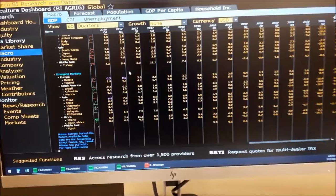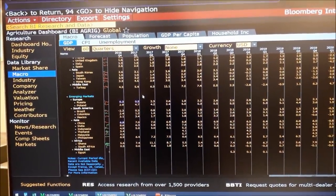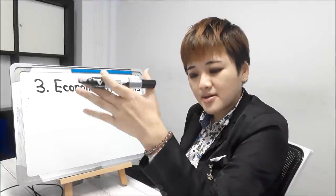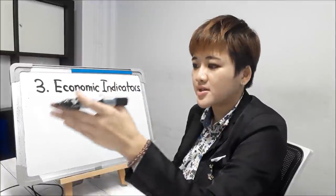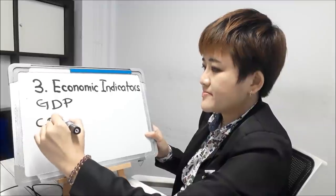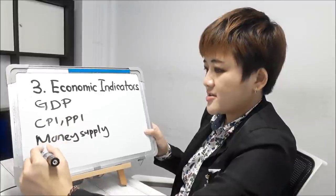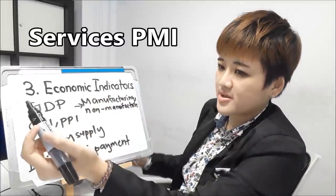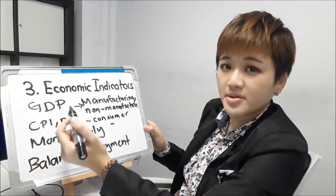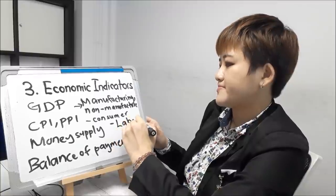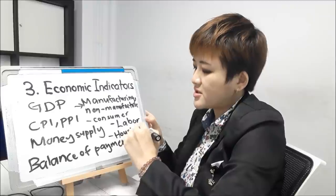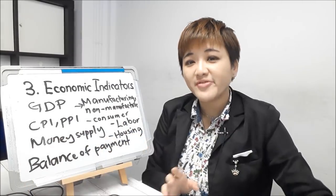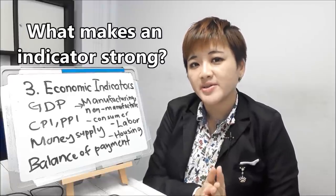The third thing you need to learn is economic indicators. There are lots of economic indicators out there, but you don't need to learn everything — just the more significant ones. It doesn't matter if it's a leading, lagging, or coincident indicator; you gotta learn all three. Examples: you gotta learn GDP, CPI, PPI, money supply, balance of payment, manufacturing and non-manufacturing data (also called services PMI), consumer sentiment, employment and unemployment data (labor data), housing data including building permits and housing starts, and durable goods orders.